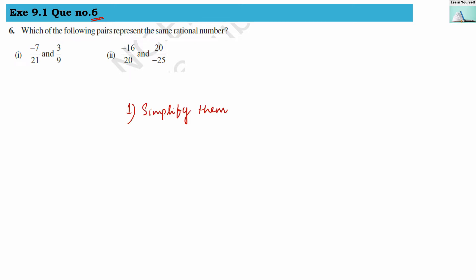For example, if they have given us 4 divided by 8, then we will simplify it: 4 over 8 gives us 1 by 2. We have to convert them into their simplest form such that we cannot reduce this further. Then the second thing we have to check is the sign associated with the rational number.